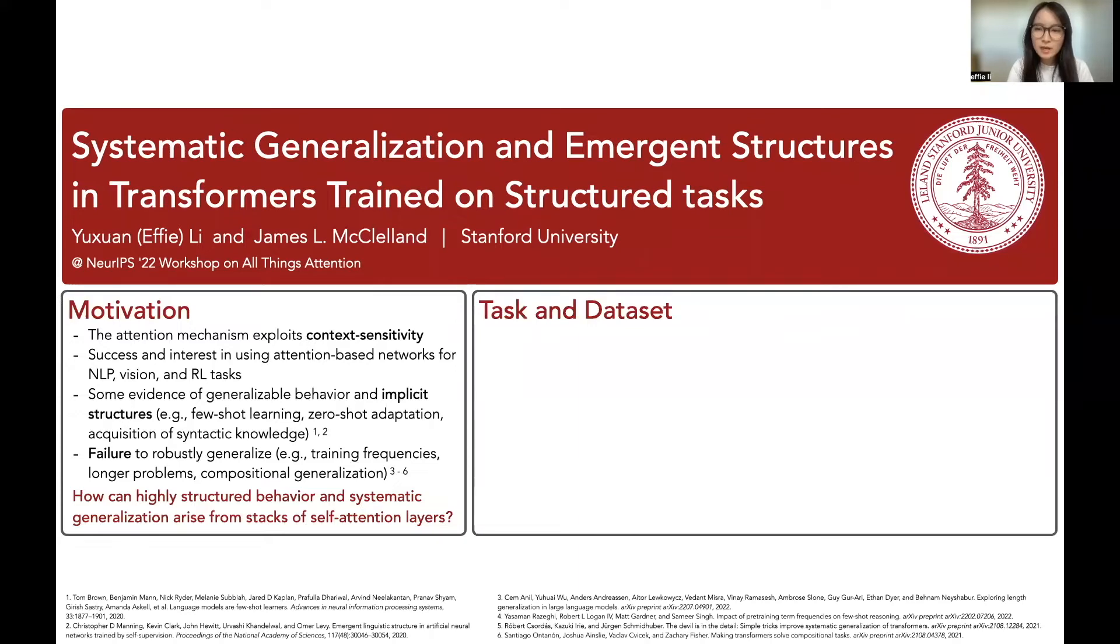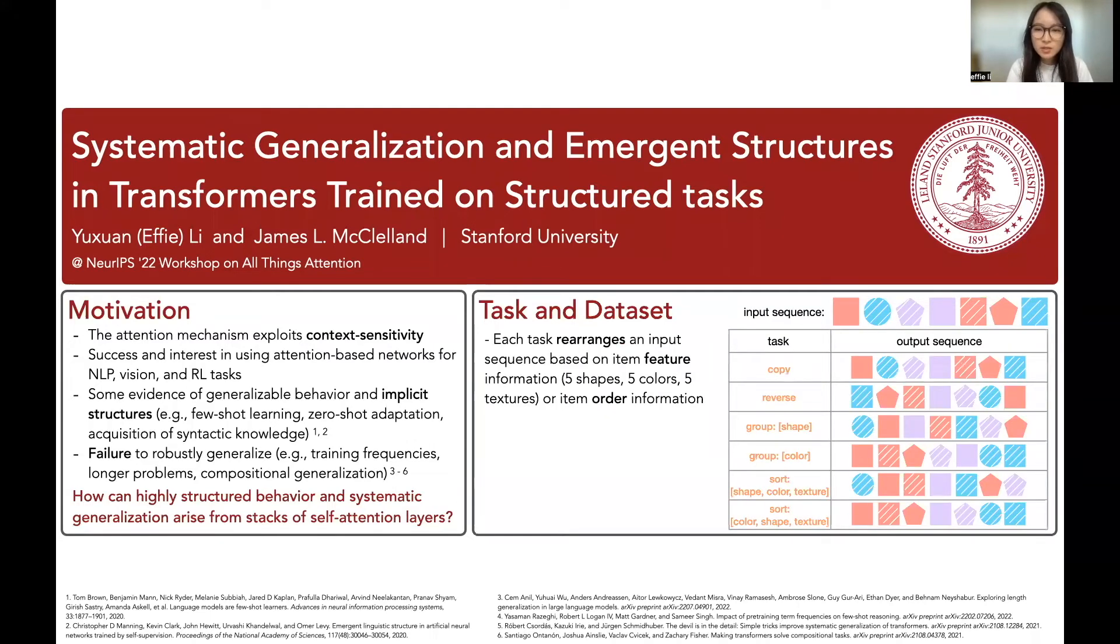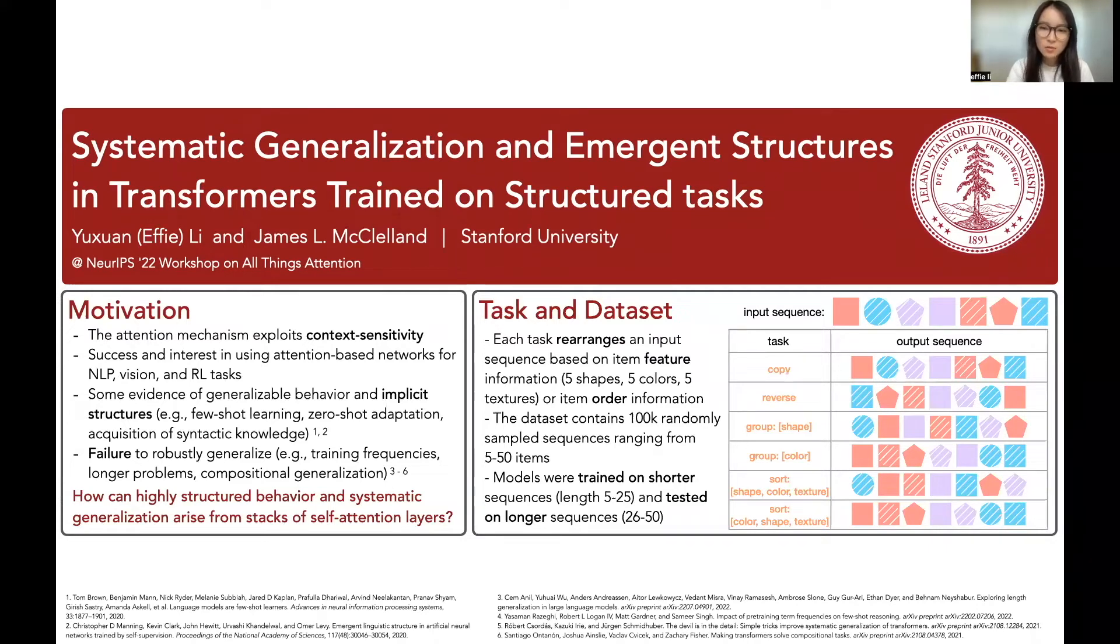We consider a set of algorithmic tasks. Given a sequence of items of different shape, color, and texture, each task rearranges them based on item feature or item order. We generated a dataset of randomly sampled item sequences, trained the models on shorter sequences, and tested the models on longer ones.